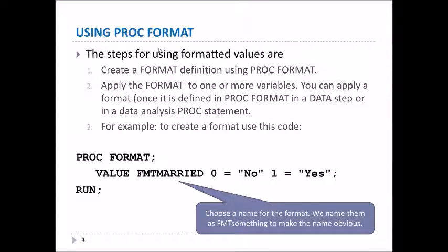The steps for using PROC FORMAT are to create the format and then to apply the format. To create the format, we use PROC FORMAT and the VALUE statement. For instance, the VALUE statement creates a format called FMT_MARRIED where 0 means 'no' and 1 means 'yes'. You can use any name you want; I tend to use FMT as the beginning of the name to help remember that it is a format name.